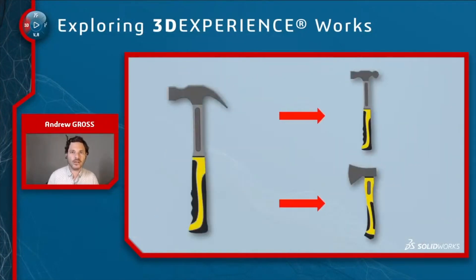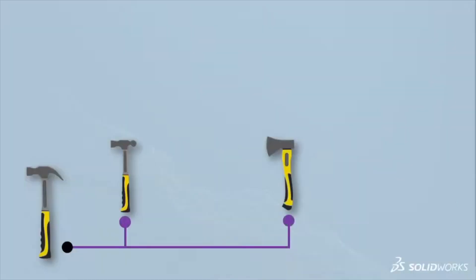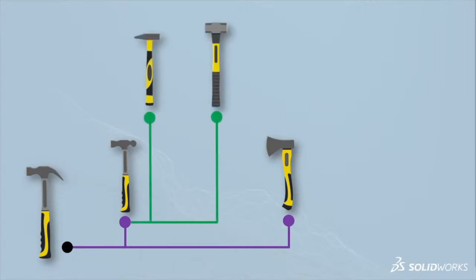Back to our story with our hammer and our growing product line — we have three products. We have a hammer that nucleates into a ball peen hammer and a hatchet. The ball peen hammer becomes the core for a welding hammer and a sledgehammer. And our hatchet becomes the base for an axe. So far this makes sense — this kind of makes sense as a product structure built through branching.